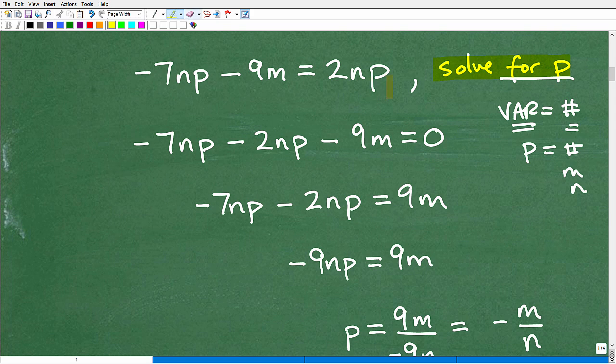I'm going to scoot that guy over to the left, and the way I do that is I subtract 2np from both sides of the equation. And here we have an NP and an NP, so these are like terms. So now I can write this this way, negative 7np minus 2np, and of course I have this negative 9m, which I'm going to deal with in a second.